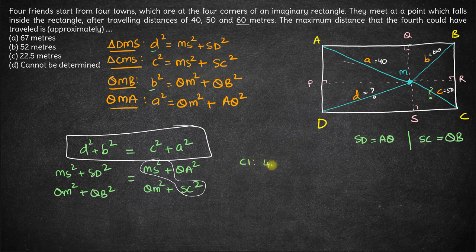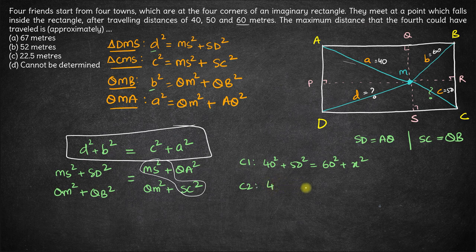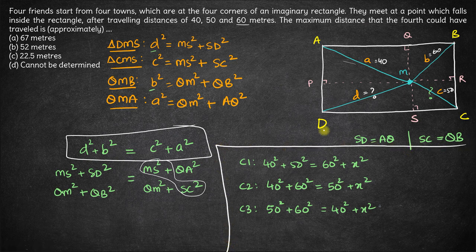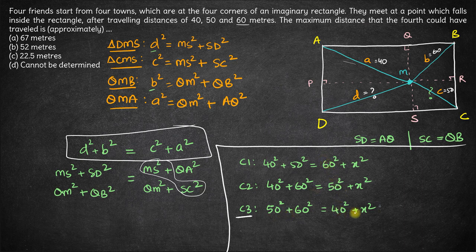So the three cases are: 40² + 50² = 60² + x²; or 40² + 60² = 50² + x²; or 50² + 60² = 40² + x². X will be maximum in the third case, because x is maximised when the subtracted term on the right (40²) is minimum. So let's solve this third case.